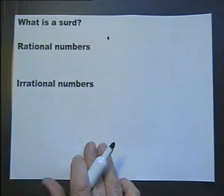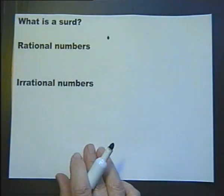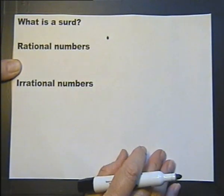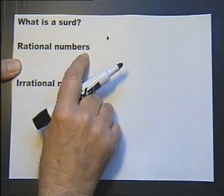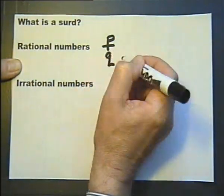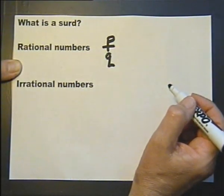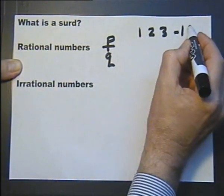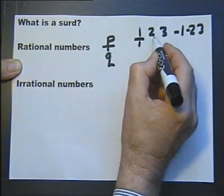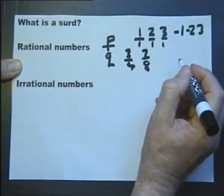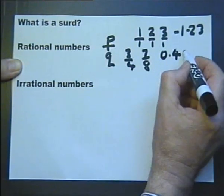So let's start with what is a surd. But before we can do that, we need to talk about rational numbers and irrational numbers. There are several definitions of rational numbers. A better one is that rational numbers can be written as P over Q, where P and Q are integers — whole numbers. So rational numbers include all whole numbers, both positive and negative, because you could write them over one to make them look like a fraction. Obviously it includes fractions, and it includes decimals, because they can be written as fractions.